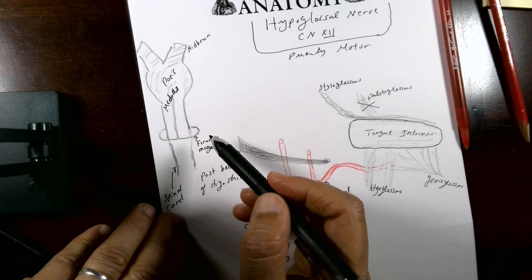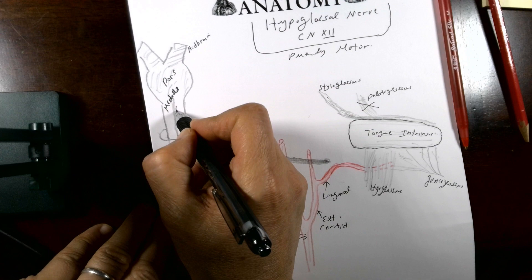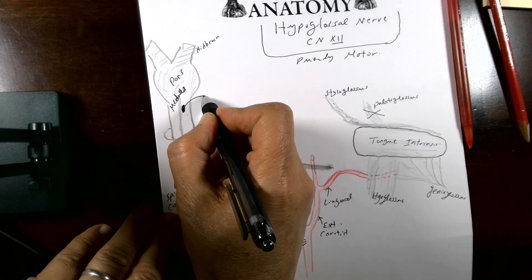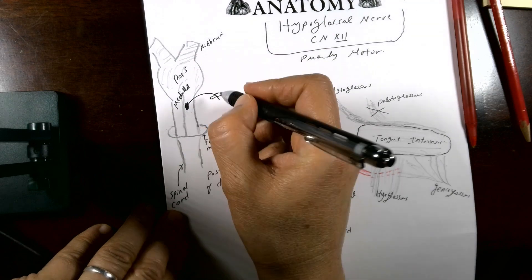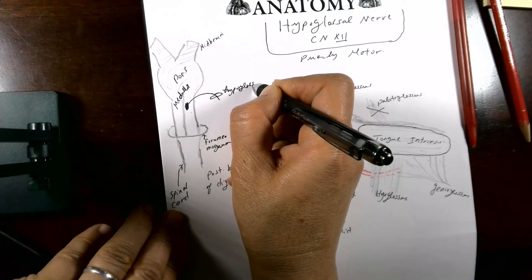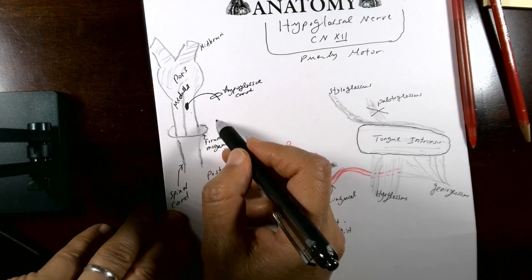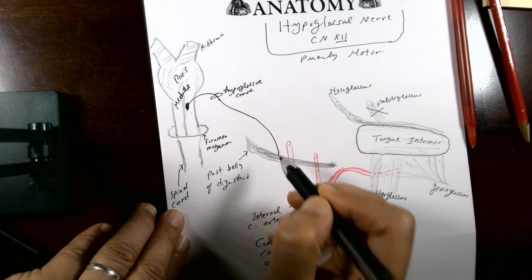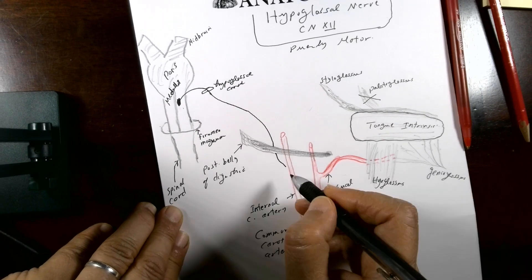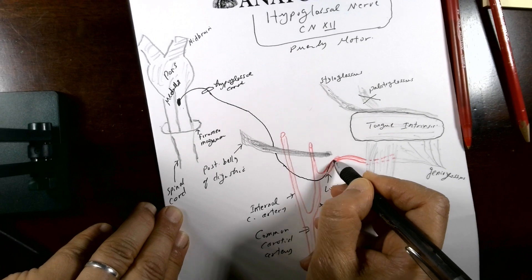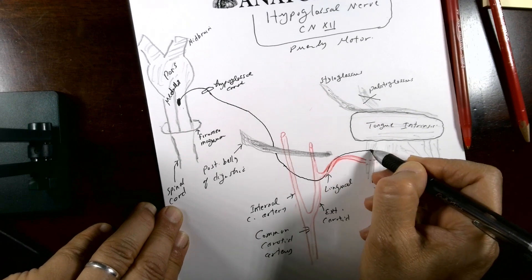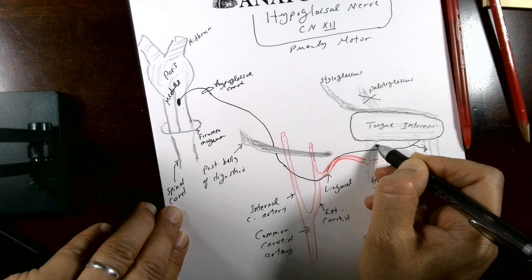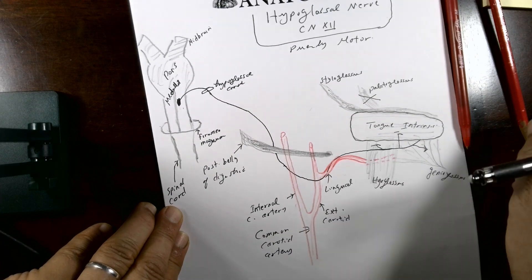Starting from the brainstem: in the medulla, you have the hypoglossal nerve nucleus. From there, the hypoglossal nerve exits the cranial cavity through the hypoglossal canal in the base of the skull. It then descends through the carotid sheath, deep to the posterior belly of digastric, crosses the internal and external carotid artery and lingual artery, then goes superficial to hyoglossus and deep to mylohyoid until it reaches the tongue.